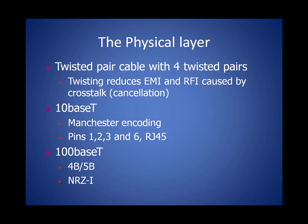Down at the physical layer, we have a couple of things to think about: the electrical and mechanical characteristics of the connector, the type of cable, and the signaling. Starting with the cable, UTP actually has four twisted pairs of wire. Of these, Ethernet uses two pairs, or four wires. Under 10BaseT, we actually use pins 1, 2, 3, and 6, and use an RJ45 connector. Pins 4 and 5 are actually telco connections.